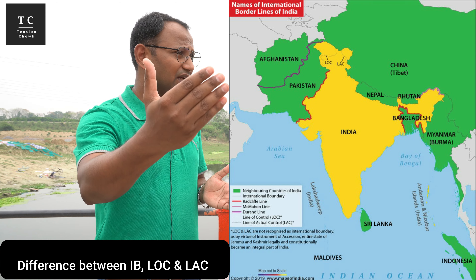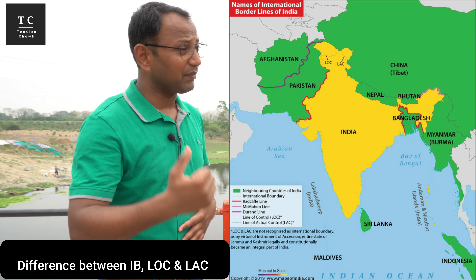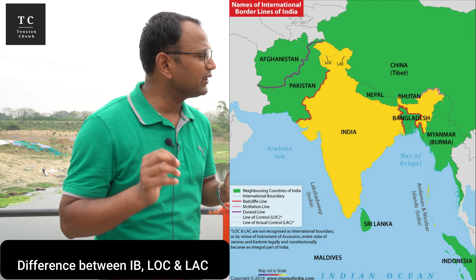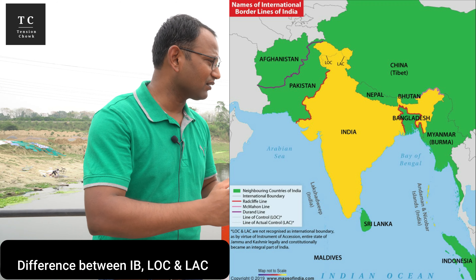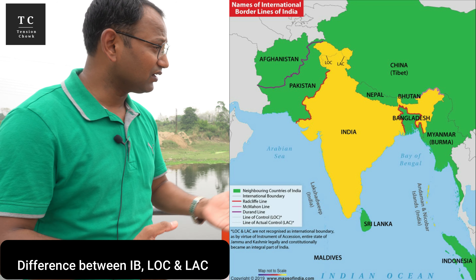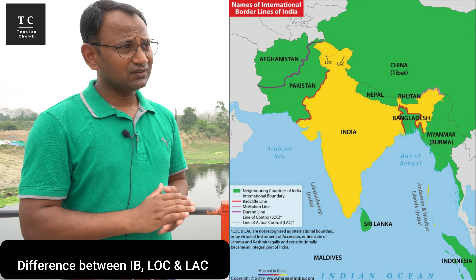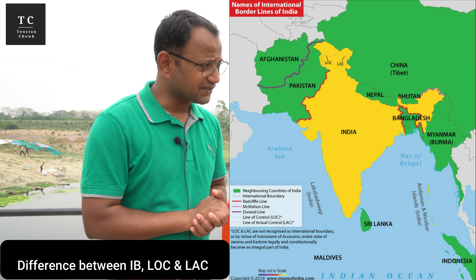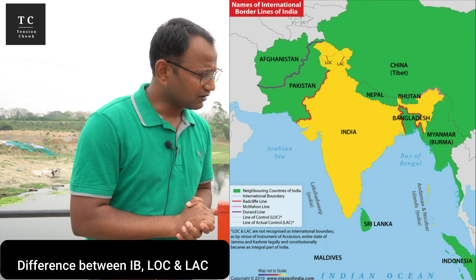The BSF is deployed on the international borders with Pakistan and Bangladesh. Now, coming to the Line of Control — the LOC refers to where you have physical presence. It is actually about who is controlling what area. The day you physically leave that area, someone else can take control of it.